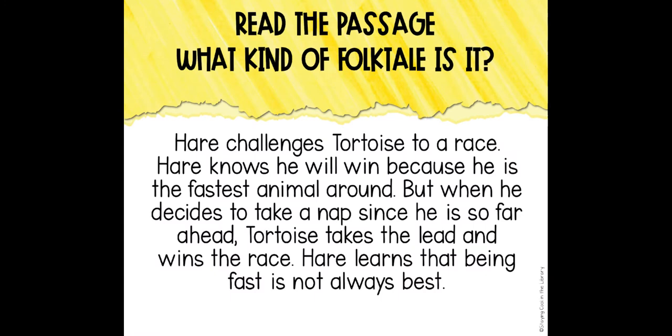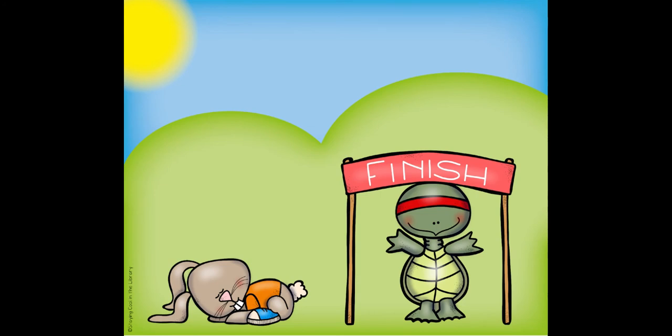Let's read this one. Hare challenges tortoise to a race. Hare knows he will win because he is the fastest animal around. But when he decides to take a nap since he is so far ahead, tortoise takes the lead and wins the race. Hare learns that being fast is not always best. If you said a fable, you are right. The characters are animals and there is a lesson — a moral — in the story.